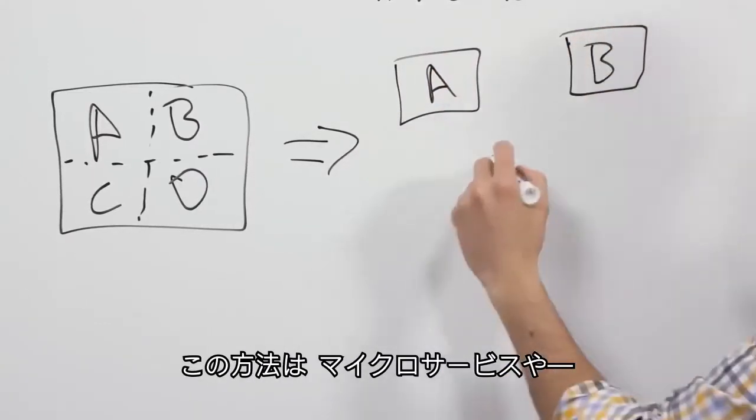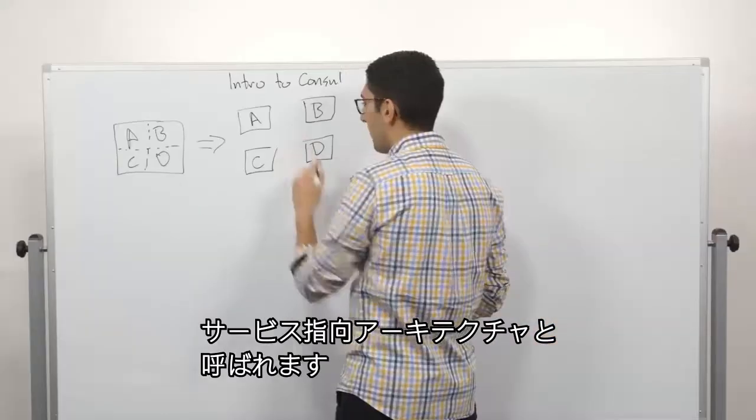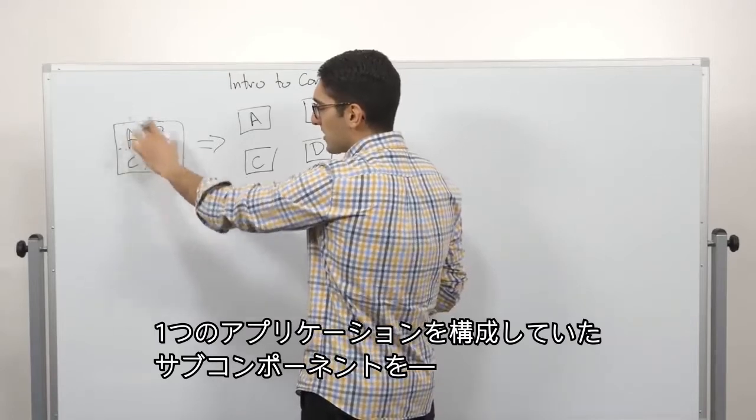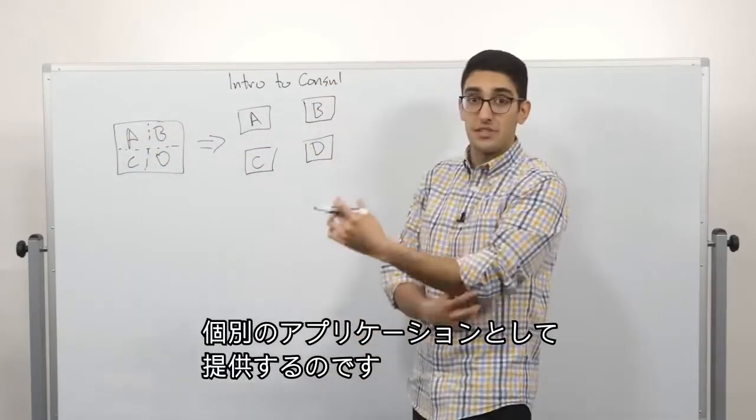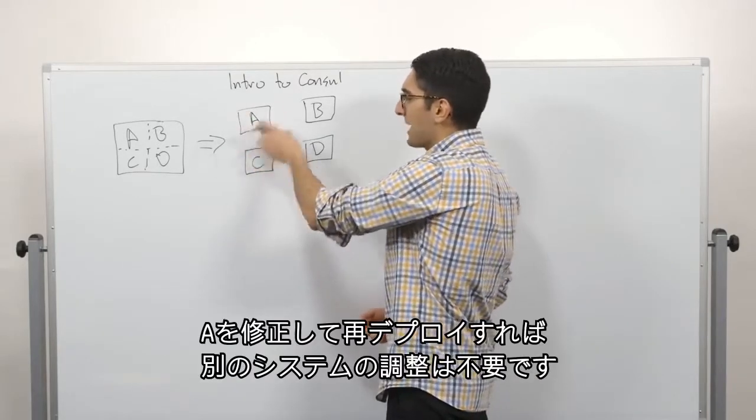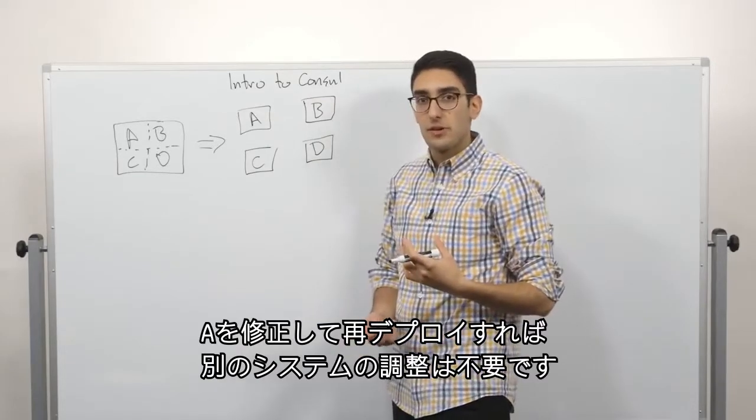To fix this, what we'd like to do is instead deploy them as discrete services. So this is what might be called a microservices or service-oriented architecture. Basically, we're taking the same monolithic application and taking all of these sub-components and now delivering them as a discrete application. So now, if there's a bug in A, let's say our login system,